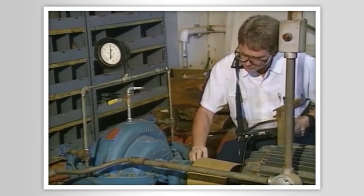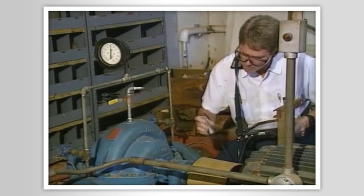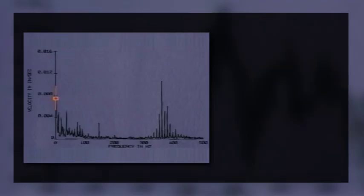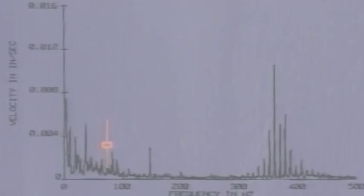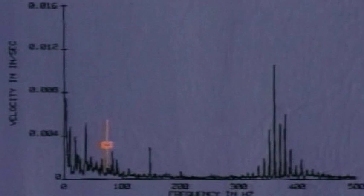Now let's look at a spectrum taken at the inboard bearing. The one-times is at a higher amplitude than in the previous spectrum, so there may in fact be a little shaft movement. But amplitude is still very low, and the one-times harmonics have disappeared. So the problem, if we can call it a problem, is very minor. The vane pass frequency is also at a low amplitude and does not generate harmonics.